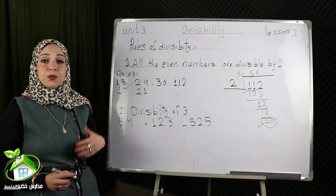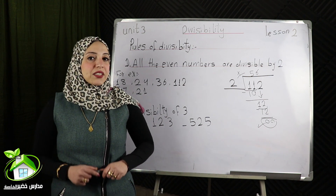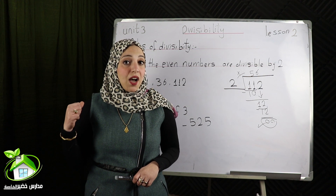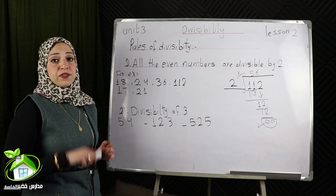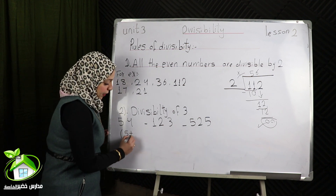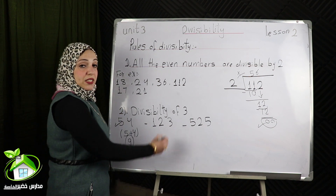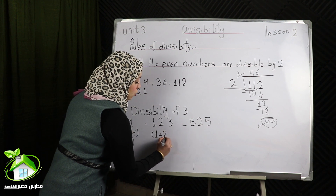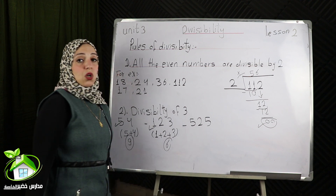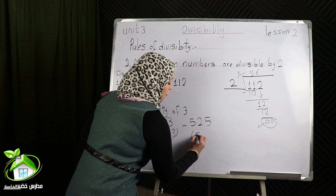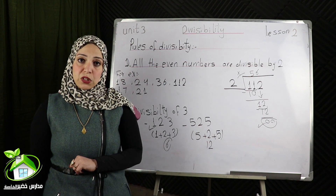Divisibility of 3. If I have a number formed from a two-digit number or more and I want to know if it's divisible by 3 or not without doing the division operation, I get the sum of its digits. And if the sum is divisible by 3, then the number is also divisible by 3. For example, 54: 5 plus 4 equals 9, and 9 is divisible by 3, so 54 is also divisible by 3. 123: 1 plus 2 plus 3 equals 6, and 6 is divisible by 3, so 123 is also divisible by 3. 525: 5 plus 2 plus 5 equals 12, and 12 is divisible by 3, so 525 is also divisible by 3.